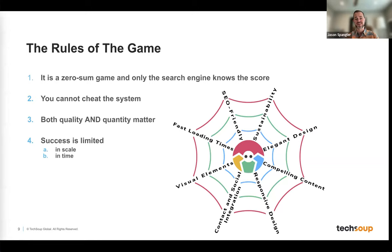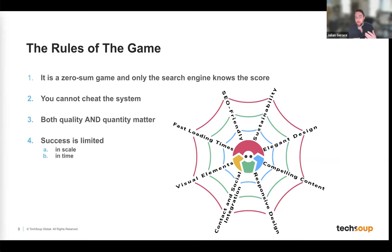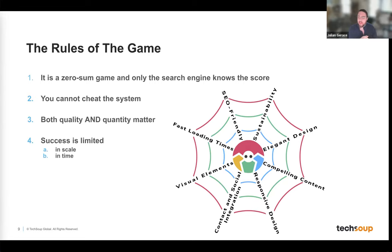You cannot cheat the system. When you're up against other organizations ranking for a certain keyword, people are always looking for an edge. But it's really not possible. There's no way to type keywords 100 times in hidden text, buy backlinks, or things like that — those will hurt you in the long run. The best approach is to optimize what you have based on Google's guidelines, focusing on quality content.